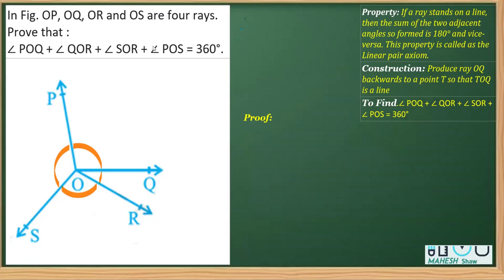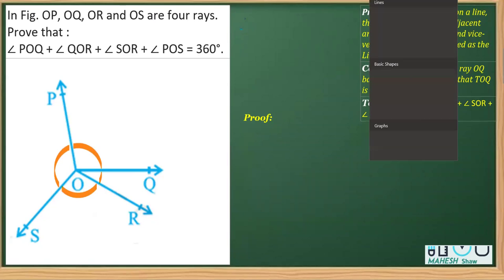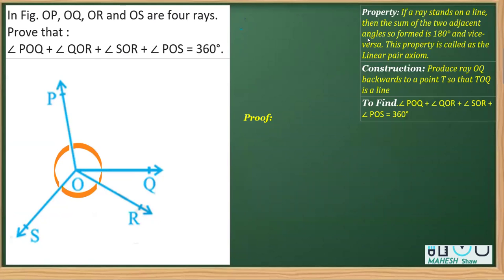For that, we are going to use this property called linear pair. Before that, you need to draw a ray in the construction part. So this is the construction part where you are going to draw a ray - say I name it OT - opposite to OQ.